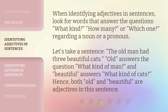When identifying adjectives in sentences, look for words that answer the questions: What kind? How many? Or which one? — regarding a noun or pronoun. For example, in the sentence 'The old man had three beautiful cats,' 'old' answers 'what kind of man?' and 'beautiful' answers 'what kind of cats?' Hence, both 'old' and 'beautiful' are adjectives in this sentence.